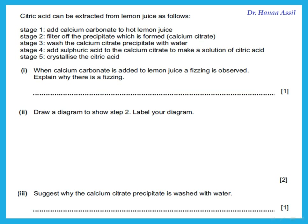In an experiment, citric acid is extracted from lemon juice. Calcium carbonate is added to hot lemon juice, the precipitate is filtered off and washed with water, then sulfuric acid is added to the calcium citrate to make a solution of citric acid, which is then crystallized. When calcium carbonate is added to lemon juice, fizzing is observed — why? Lemon juice is acidic, so adding carbonate to acid produces carbon dioxide gas, which causes the fizzing.